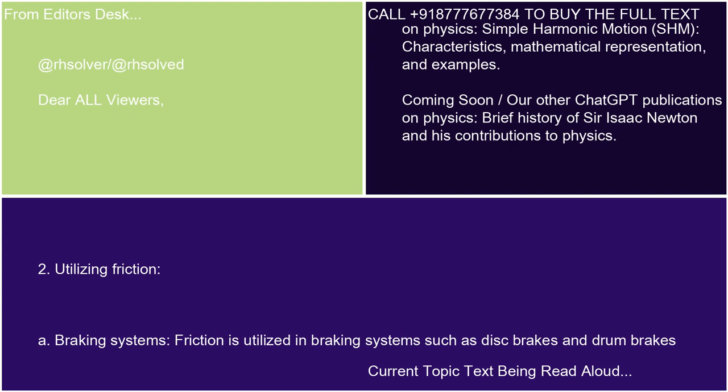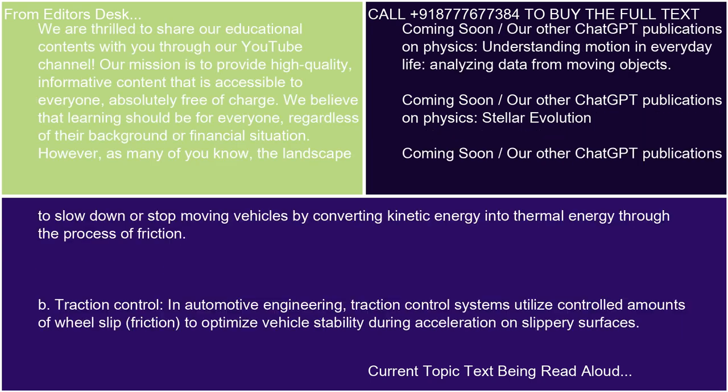2. Utilizing Friction. A. Braking Systems. Friction is utilized in braking systems such as disc brakes and drum brakes to slow down or stop moving vehicles, by converting kinetic energy into thermal energy through the process of friction. B. Traction Control. In automotive engineering, traction control systems utilize controlled amounts of wheel slip friction to optimize vehicle stability during acceleration on slippery surfaces.